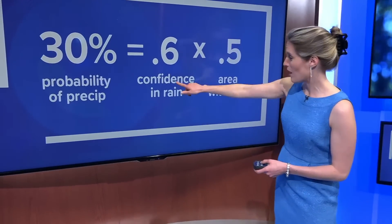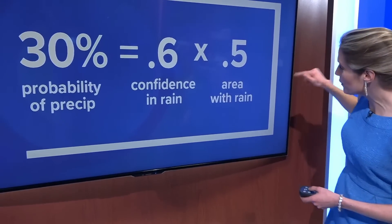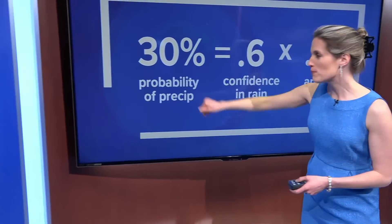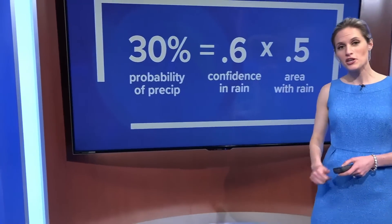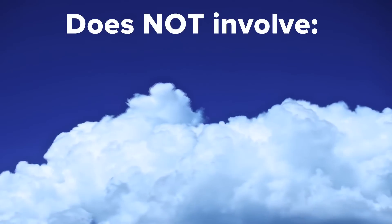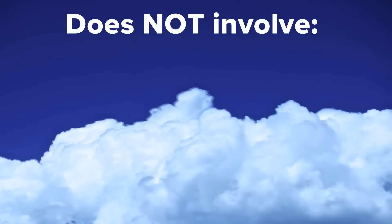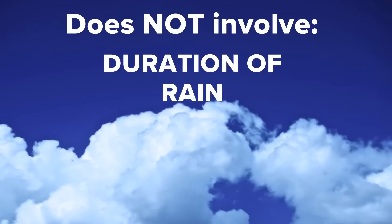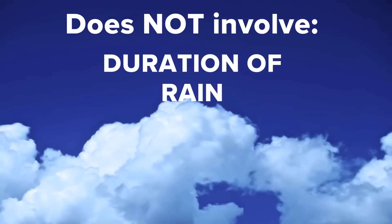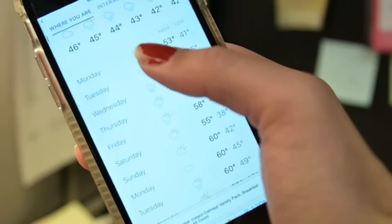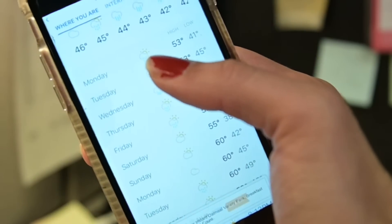So in that case, the confidence is lower, the area with rain is likely lower, and the probability of precipitation is also lower. Remember that the probability of precipitation value doesn't have anything to do with how long the rain will last or how intense it could be. That's where we come in and lay out the details for you on air and online.